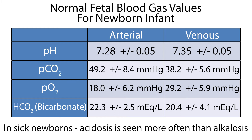A pH of less than 7.1 may indicate birth asphyxia or hypoxia severe enough to cause neurological deficits. In a sick newborn, acidosis is seen more often than alkalosis. Note that infants with abnormal blood gas results may be acceptable depending on the gestational age of the infant or the disease process. Remember to look not only at the lab results, but also the Apgar scores and the child's general condition.